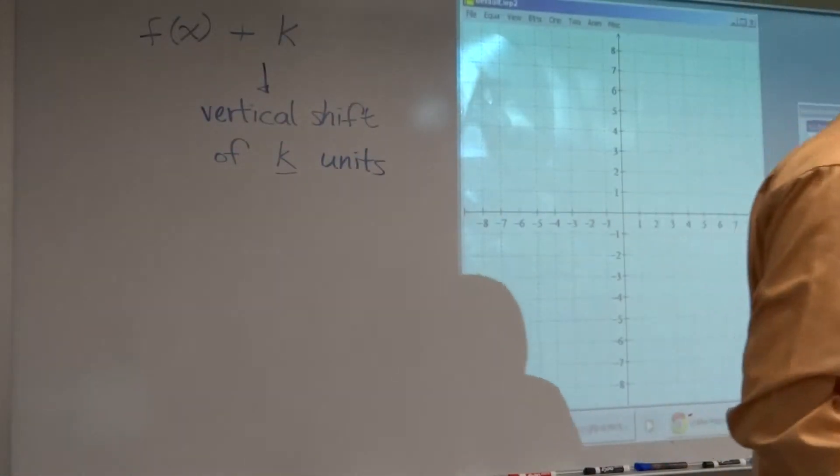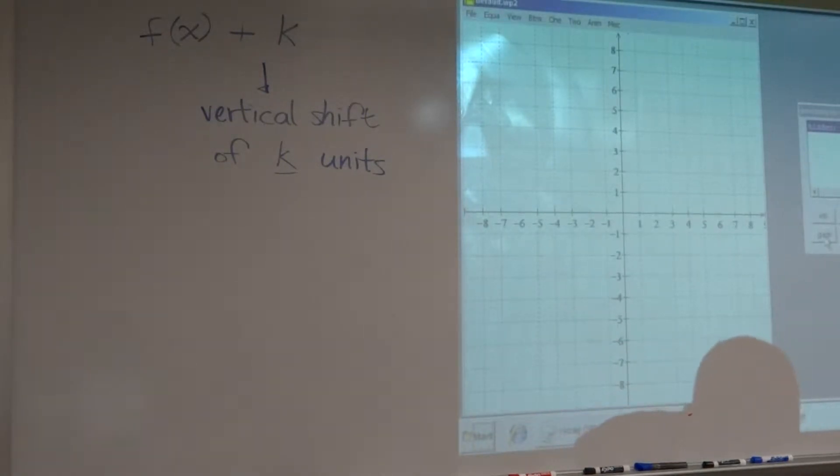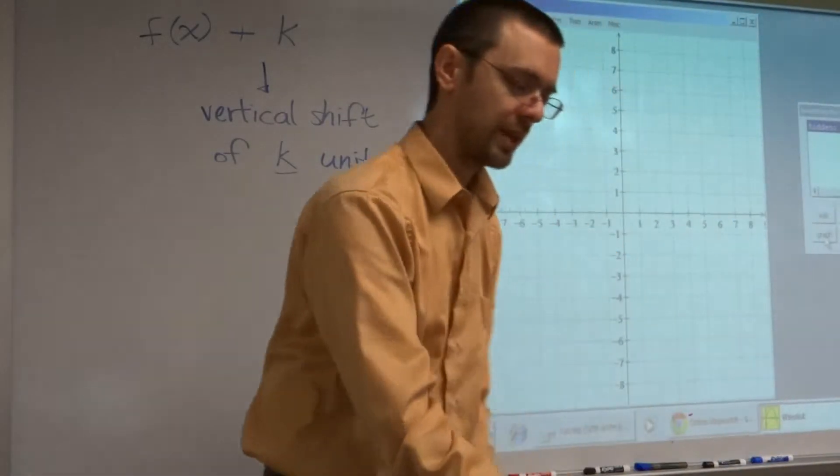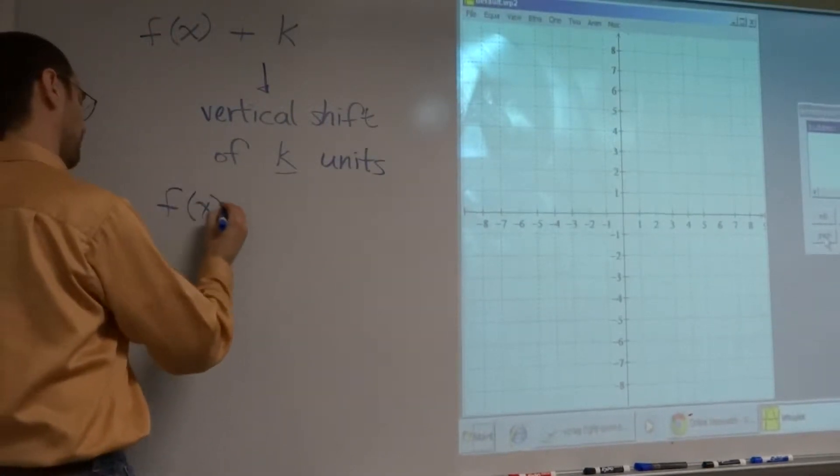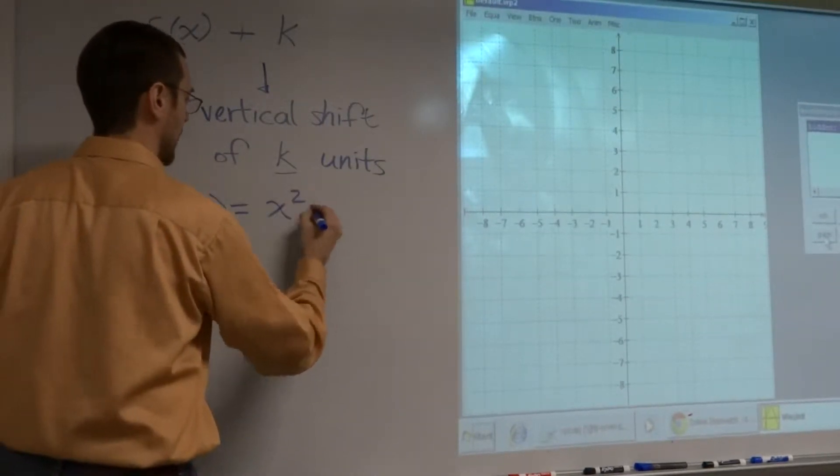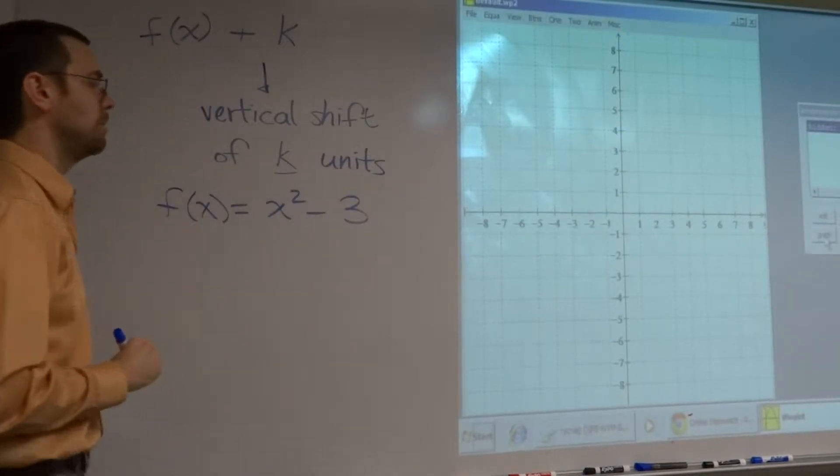It's going to indicate a vertical shift of k units. Now, the first guy we want to look at is this one right here. f of x is equal to x squared minus 3.